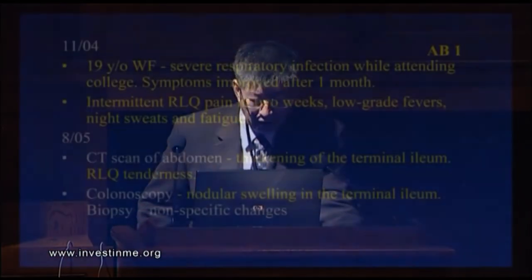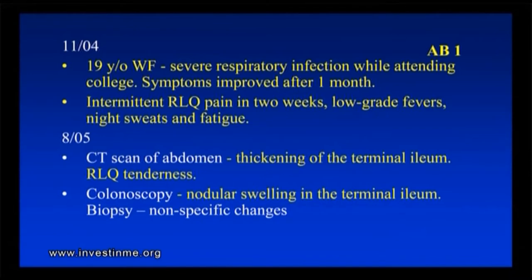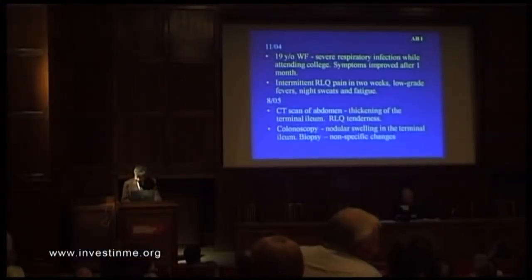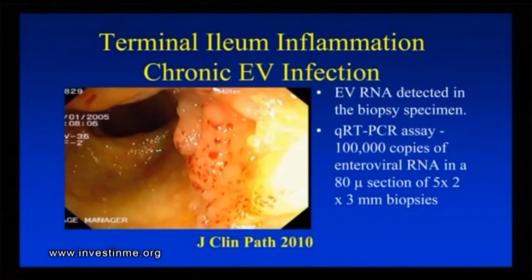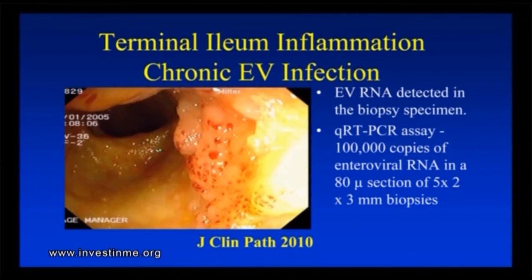This means something. She did have low-grade fevers, night sweats, and fatigue, but was able to function at about 80% normal. She managed to finish that quarter around May or so, but continued to have increasing right lower quadrant pain. So in August 2005, about nine months later, she went to see a gastroenterologist. A CT scan of the abdomen showed thickening of the terminal ileum — the end of the small bowel before it becomes the colon. She also had right lower quadrant tenderness, almost as if she had appendicitis. A colonoscopy was done showing nodular swelling in the terminal ileum, and the biopsy showed nonspecific changes. They were looking for lymphoma and Crohn's disease based on this finding. We did find enterovirus RNA in this tissue and quantitated it using quantitative RT-PCR technique.